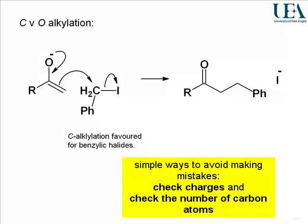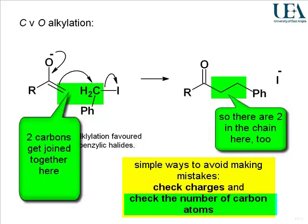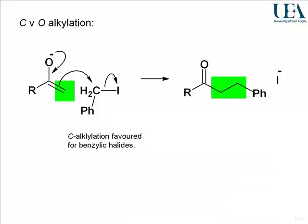The other thing worth being careful about — because it's the sort of error which doesn't really make any sense and has to be just carelessness — is to check the number of carbons as well. As the examples get more complicated, you may write down structures where you've written one carbon too many or one carbon too few, and then the whole logic about how the mechanism works is destroyed. Check you've got the right number of carbon atoms: in this case, the alpha carbon next to the carbonyl group and the electrophilic centre gives us two carbon atoms in the centre of that structure.